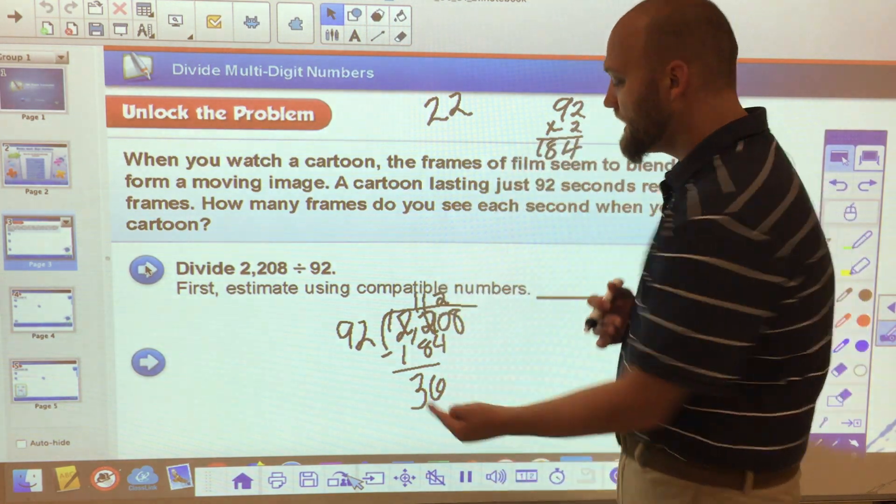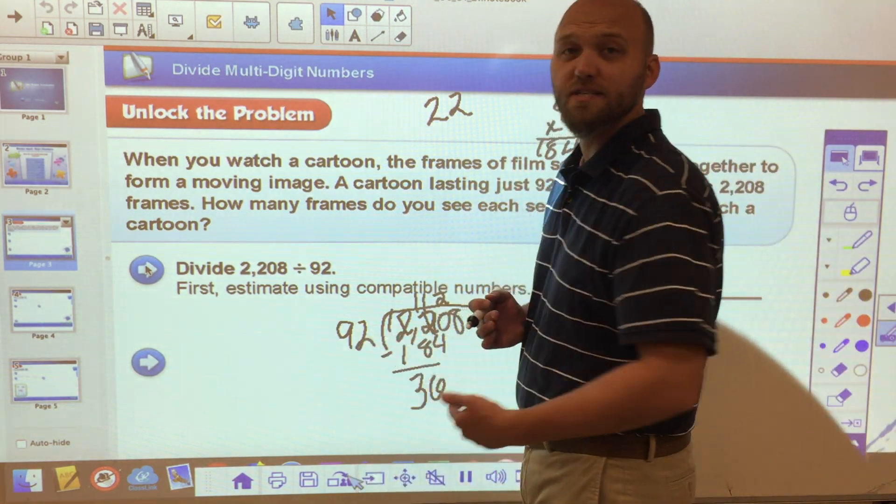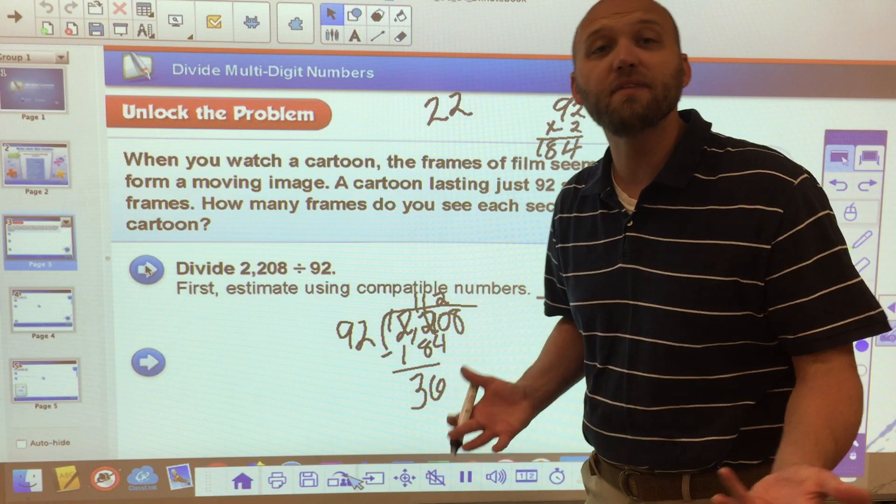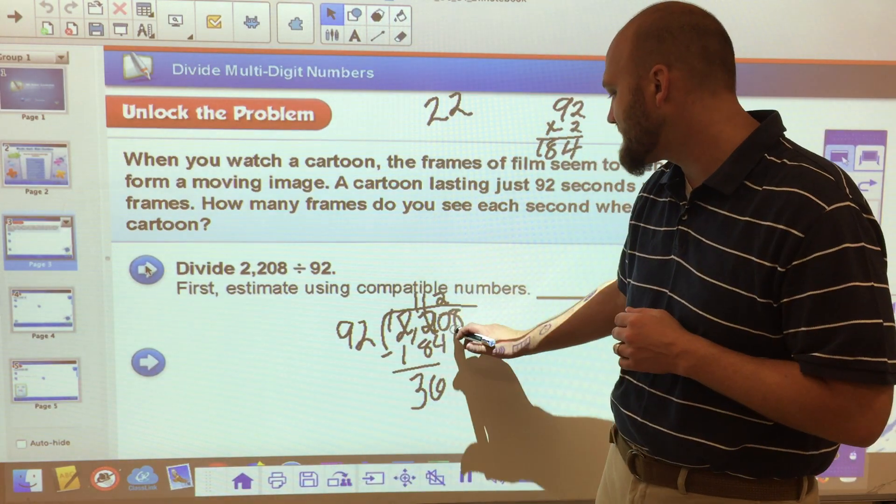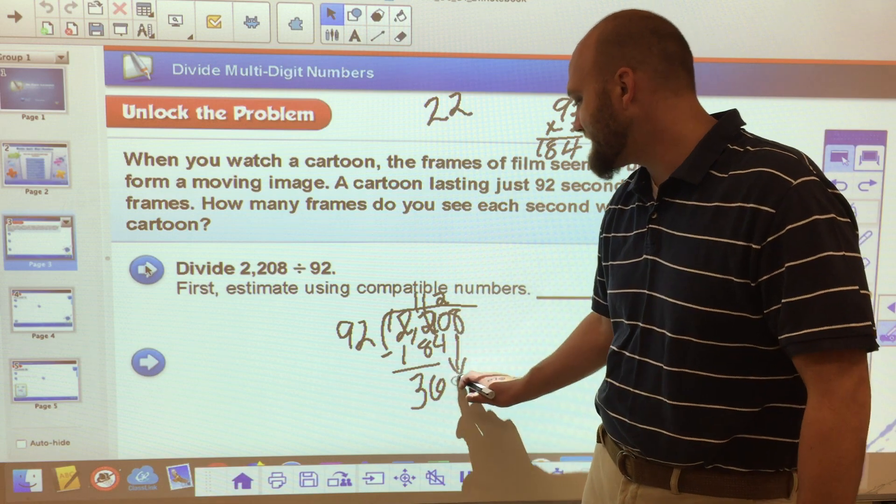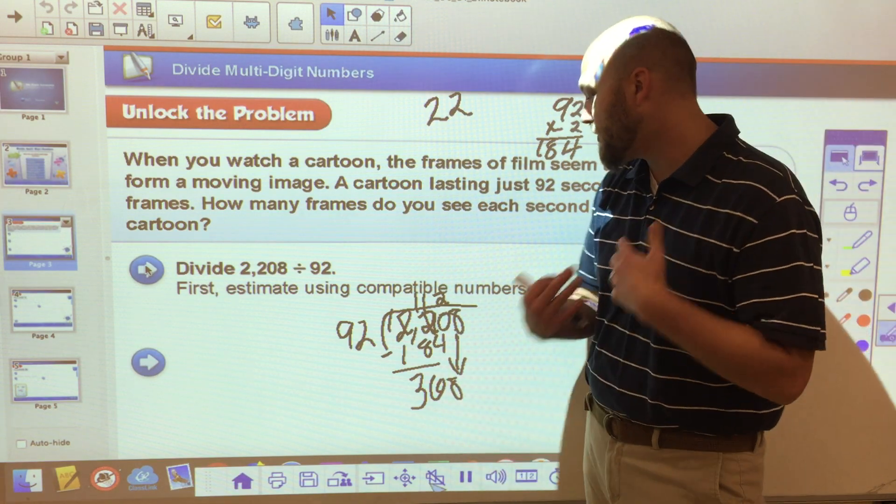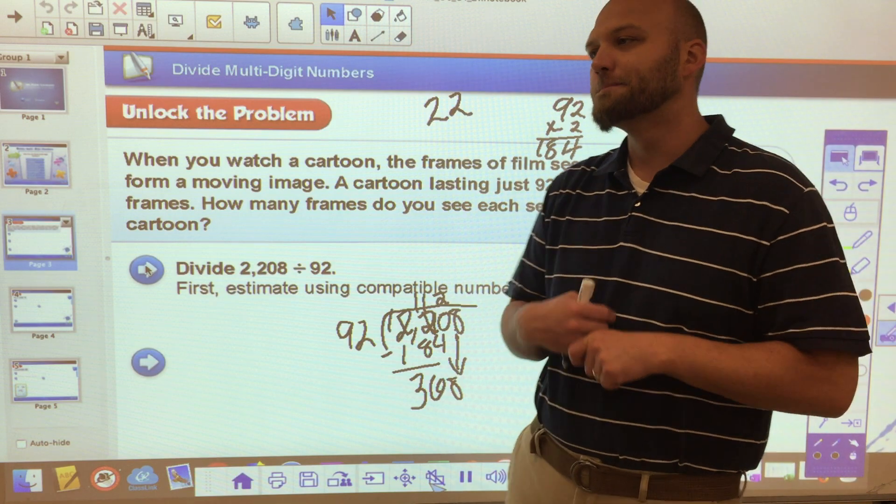36. Now I check my work knowing that this number is smaller than this number because otherwise I have one more time that I can take it out. So I know that 36 is smaller than 92. So now I want to take the next number and bring it down. How many times will 92 go into 368?